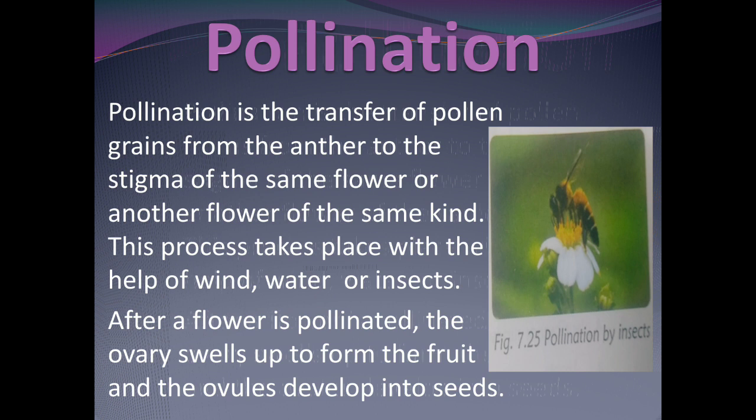Our flower parts topic is now completed. The next and last topic of the chapter is pollination. Pollination is the transfer of pollen grains from the anther to the stigma of the same flower or another flower of the same kind.